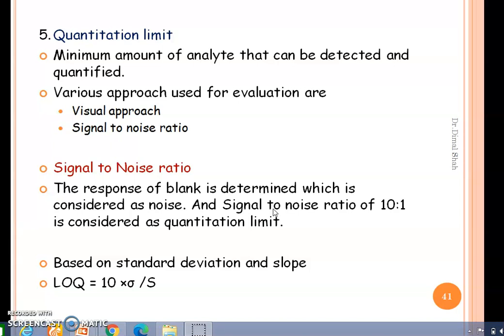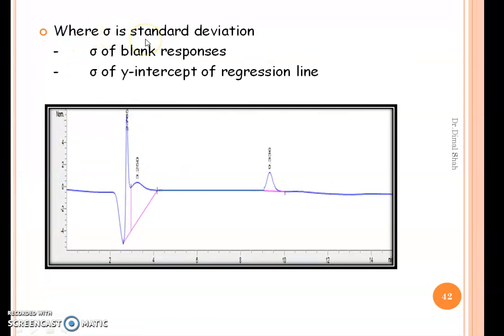The second way is based on standard deviation and slope, where LOQ (limit of quantification) is equal to 10 multiplied by sigma divided by slope. Here, sigma is the standard deviation of either the blank response or the standard deviation of the y-intercept of the regression line, and S is the mean of the slope. On a sample chromatogram, the compound response that is 9 times that of blank response is considered as LOQ.